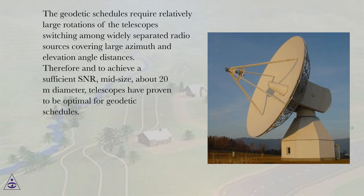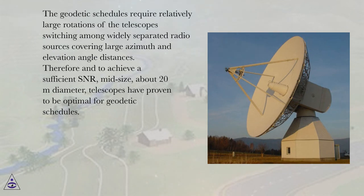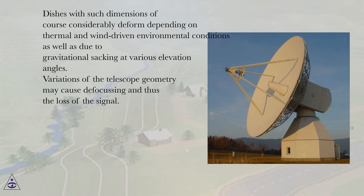The geodetic schedules require relatively large rotations of the telescope, switching among widely separated radio sources covering large azimuth and elevation angle distances. Therefore, and to achieve a sufficient SNR, mid-size — about 20-meter diameter — telescopes have proven to be optimal for geodetic schedules.